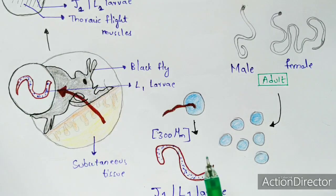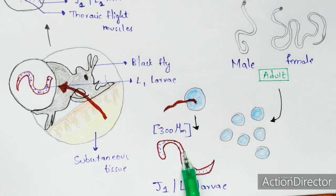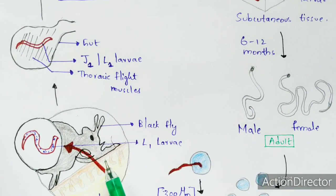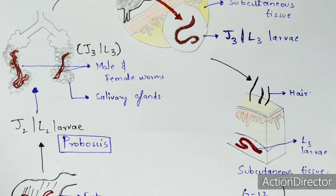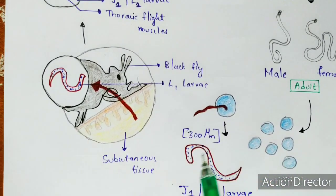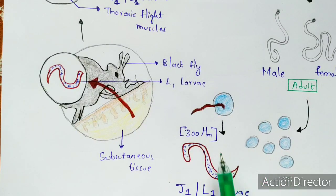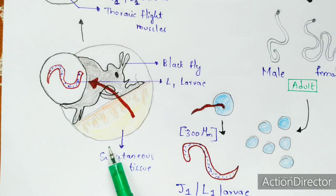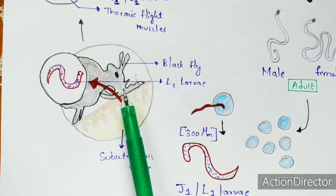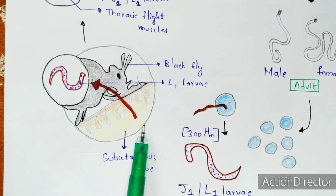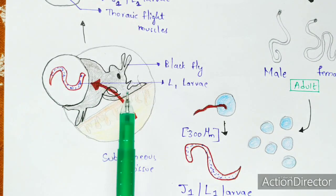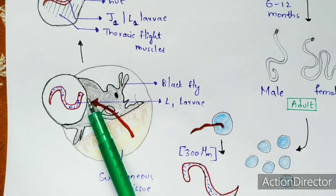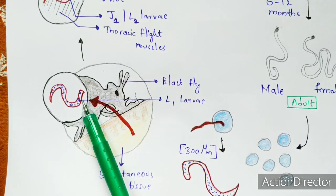These J1 or L1 larvae, present in the subcutaneous tissue, are then taken up when the black fly bites the human again. The larvae enter the gut of the black fly through the blood meal ingested during the bite.